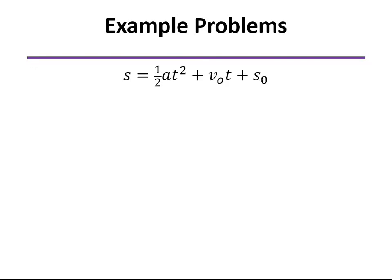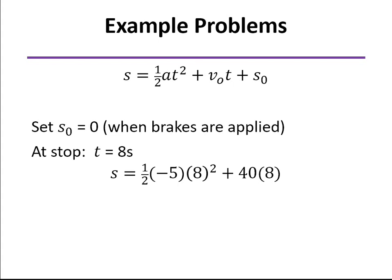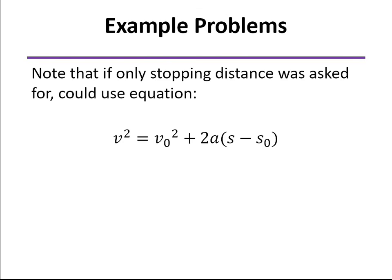We can then take that value of time, plug into this equation, and find the position s after eight seconds. That would be the distance that is traveled. So that is the stopping distance. But we'll point out, if we didn't need to know the stopping time and only needed to know the distance, then we could use this equation. We know everything except for the final value of s, and we can solve directly for that without finding the time.